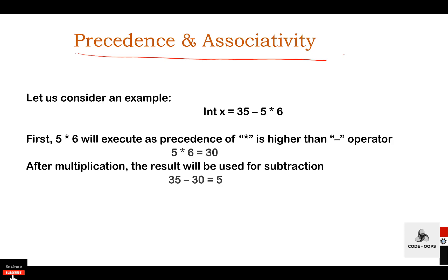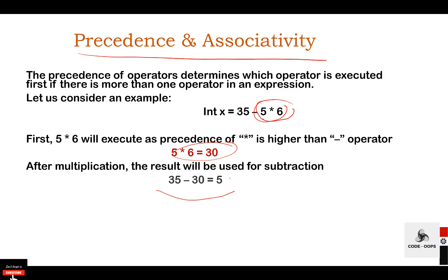For example: int x = 35 - 5 * 6. In this case, 5 * 6 will execute first because the precedence of the star operator is higher than the minus operator. 5 * 6 equals 30. After multiplication, the result is used for subtraction: 35 - 30, giving an output of 5.